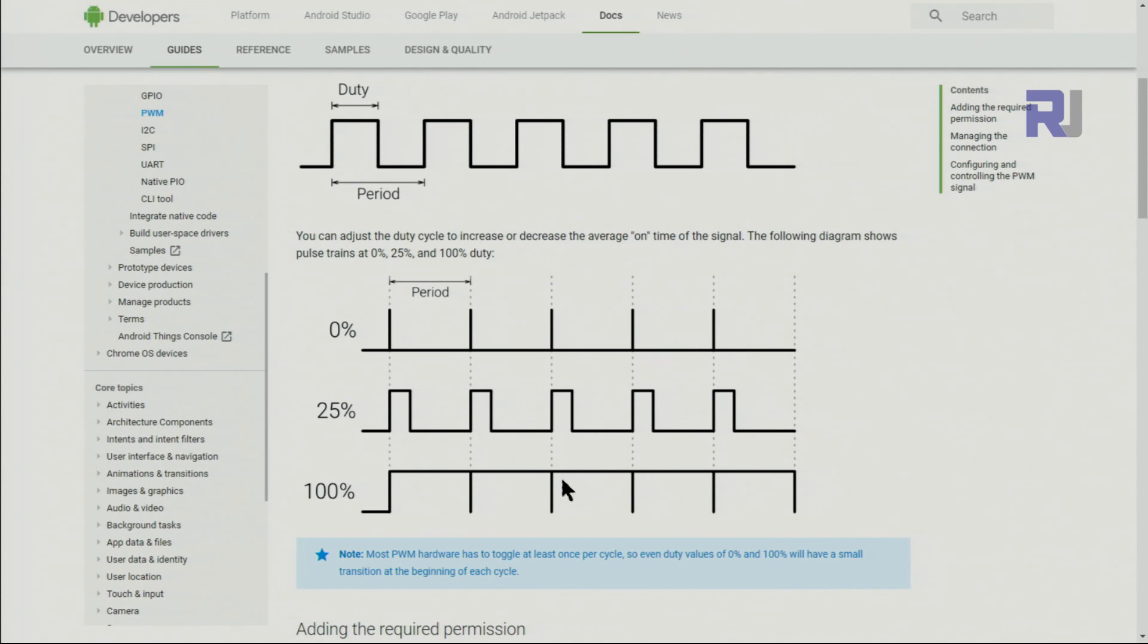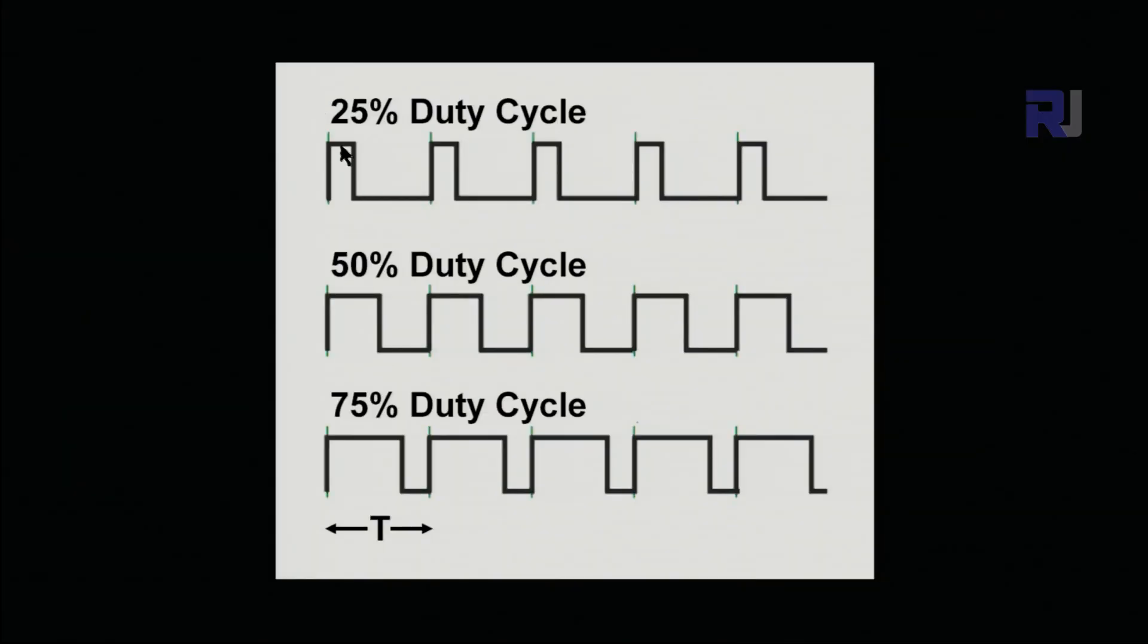These lines just show you that this is one cycle. This is 25%, as we saw like before, this is 50%, and then 75%. As you can see here, this was 25% and 75% it was low, so duty cycle is 25. And here is 25% high and 75% low. The cycles are all aligned.